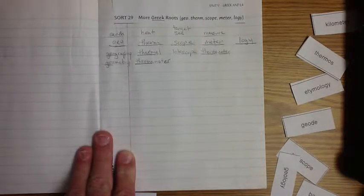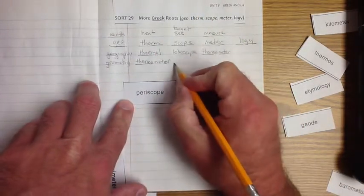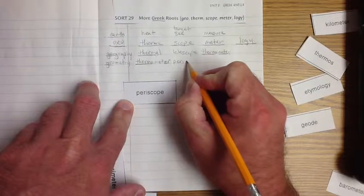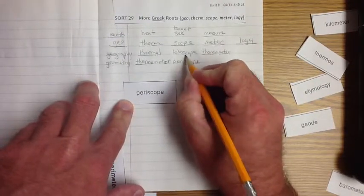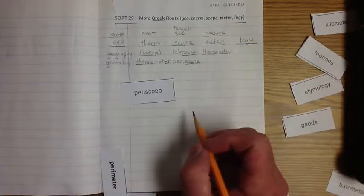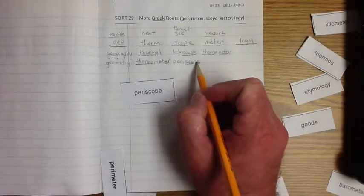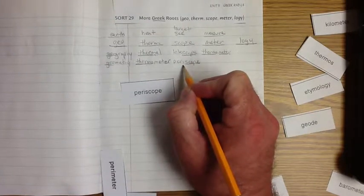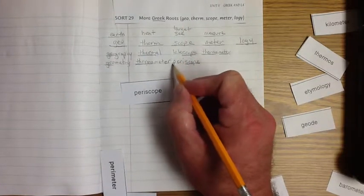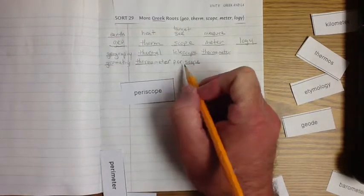So let's look at this one right here. Let's look at periscope. We've got the scope, we've got to remember to underline those. Periscope actually means to look, to see, and peri means around. So, to see around. So when we look through a periscope, we're looking around. Isn't that cool?